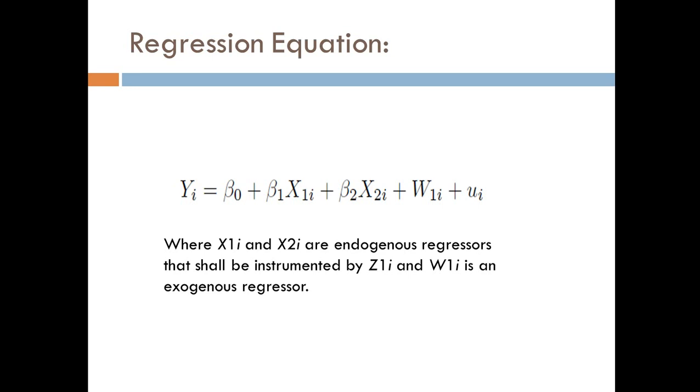Let's discuss with the help of regression equation. Y equal to b0 plus b1 x1 plus b2 x2 plus w plus error term, where x1 x2 are endogenous regressors that shall be instrumented by Z1 and w is an exogenous regressor.